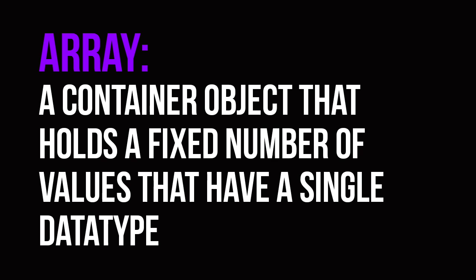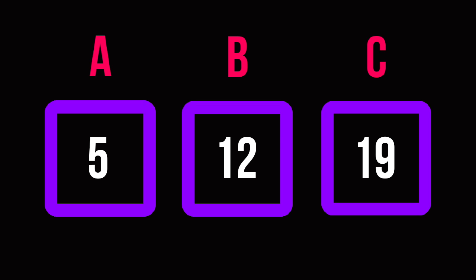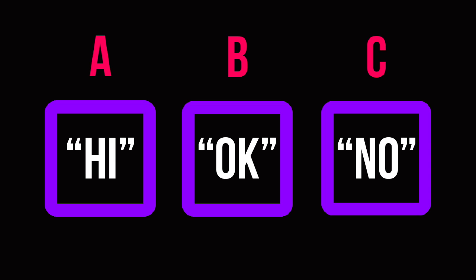What is an array? Well, it's a container object that holds a fixed number of values that have a single data type. It's basically like a thing that has many slots that you can put stuff in. So say you have a row of slots — say three slots: slot A, slot B, slot C. If you put an int in slot A, then you have to put an int in slot B and C as well. If you put a string in slot A, B and C also have to be strings inside of their slots.